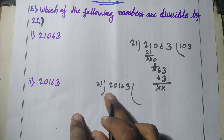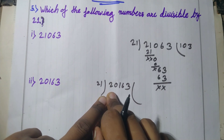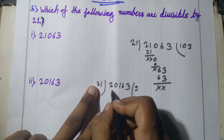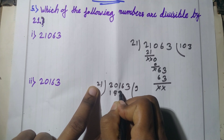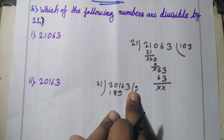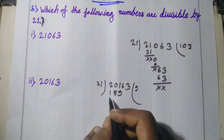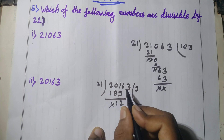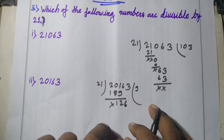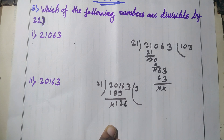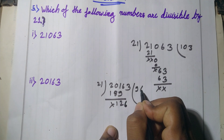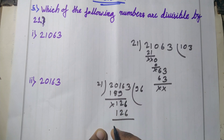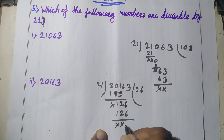The first working group is 201. 21 times 9 equals 189. Subtract: the remainder is 12. Bringing down the next digit 6, giving 126.